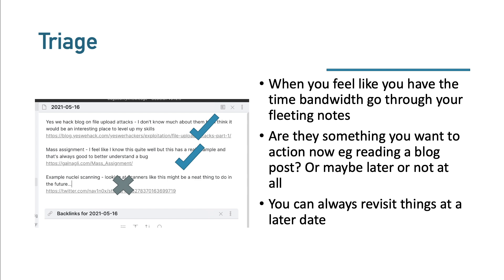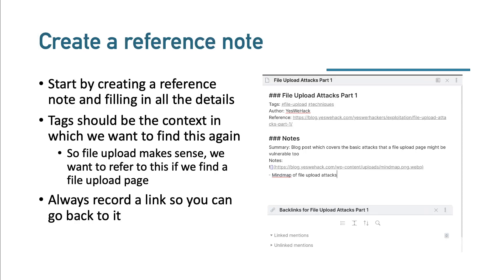Focus on the most relevant items first. You can always revisit things at a later date — you don't have to throw the note away. As long as you write a few notes about why something was interesting, you can search for a topic like Nuclei at a later date and get all that information back from your daily notes.